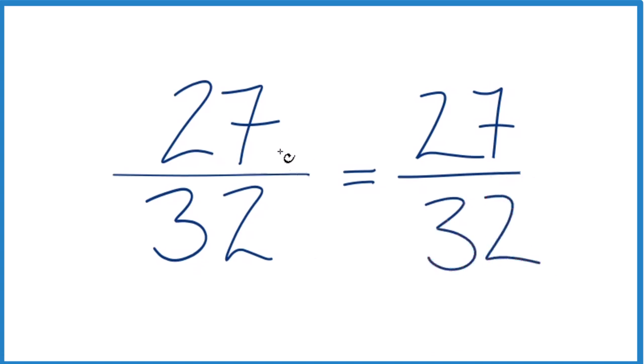What that means is that the fraction 27/32 is already simplified. We can't reduce it down any further. The greatest common factor is 1.